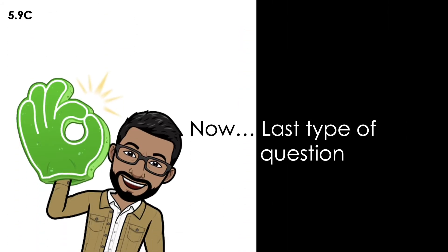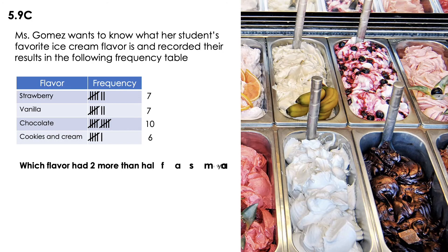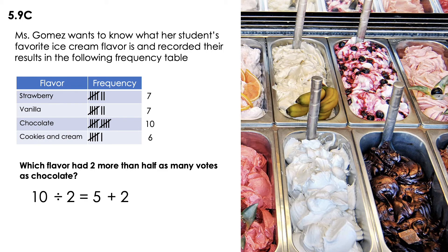Last type of question: which flavor had two more than half as many votes as chocolate? If it's two more than half, first I have to find the half. Chocolate is 10, so half of 10 is 5, and if I'm adding two more, that's 7. Seven means strawberry and vanilla each had two more than half as many votes as chocolate.